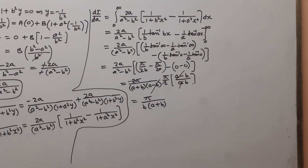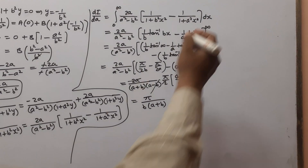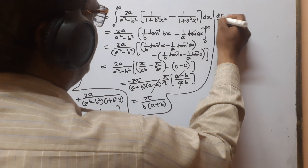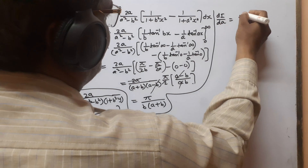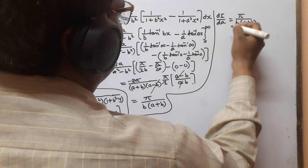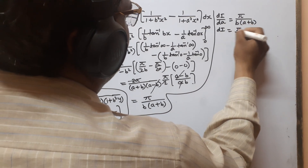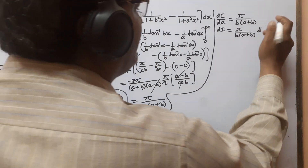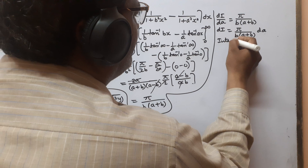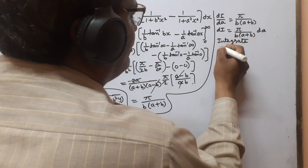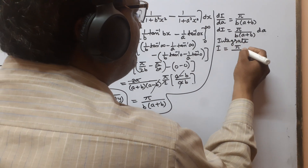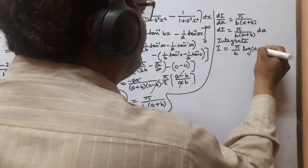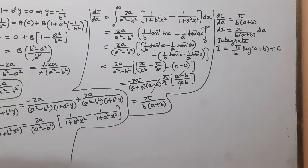Now we integrate. dI/da = π/[b(a + b)], so dI = π/[b(a + b)] da. Integrating, we get I = (π/b) log(a + b) + C, where C is the integration constant. Suppose this is equation 2.